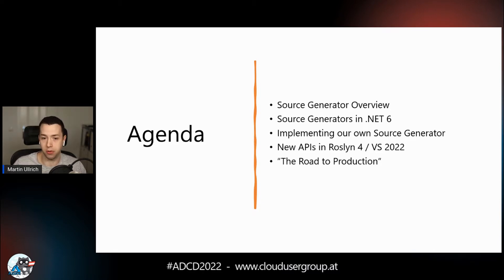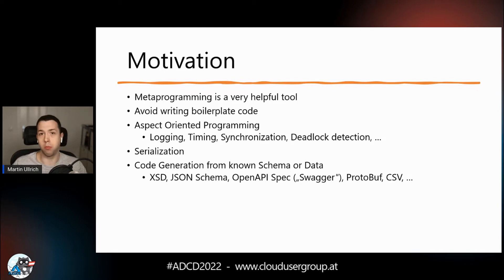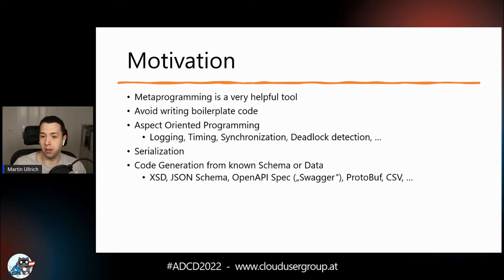It's all about meta programming — a very helpful tool because you don't want to do jobs that machines were created to do. You don't want to end up typing a lot of code that is always the same. One of the more popular terms for that is aspect-oriented programming — adding aspects like logging, timing, synchronization, and data detection — which are usually topics that other meta programming tools deal with.